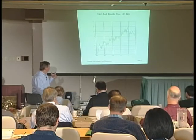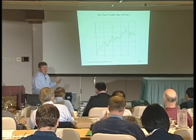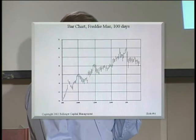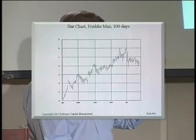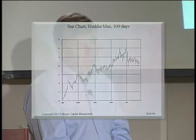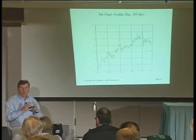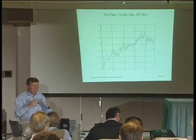Here is the classic chart of technical analysis. Each bar represents one period of trading — a line drawn from the high to the low of the period, with a tick to the left for the opening price and a tick to the right for the closing price. This type of chart has been used in this country for perhaps 80 or more years. It's a pretty good chart, but it doesn't really draw your eye in a useful way to the relationships of the data.